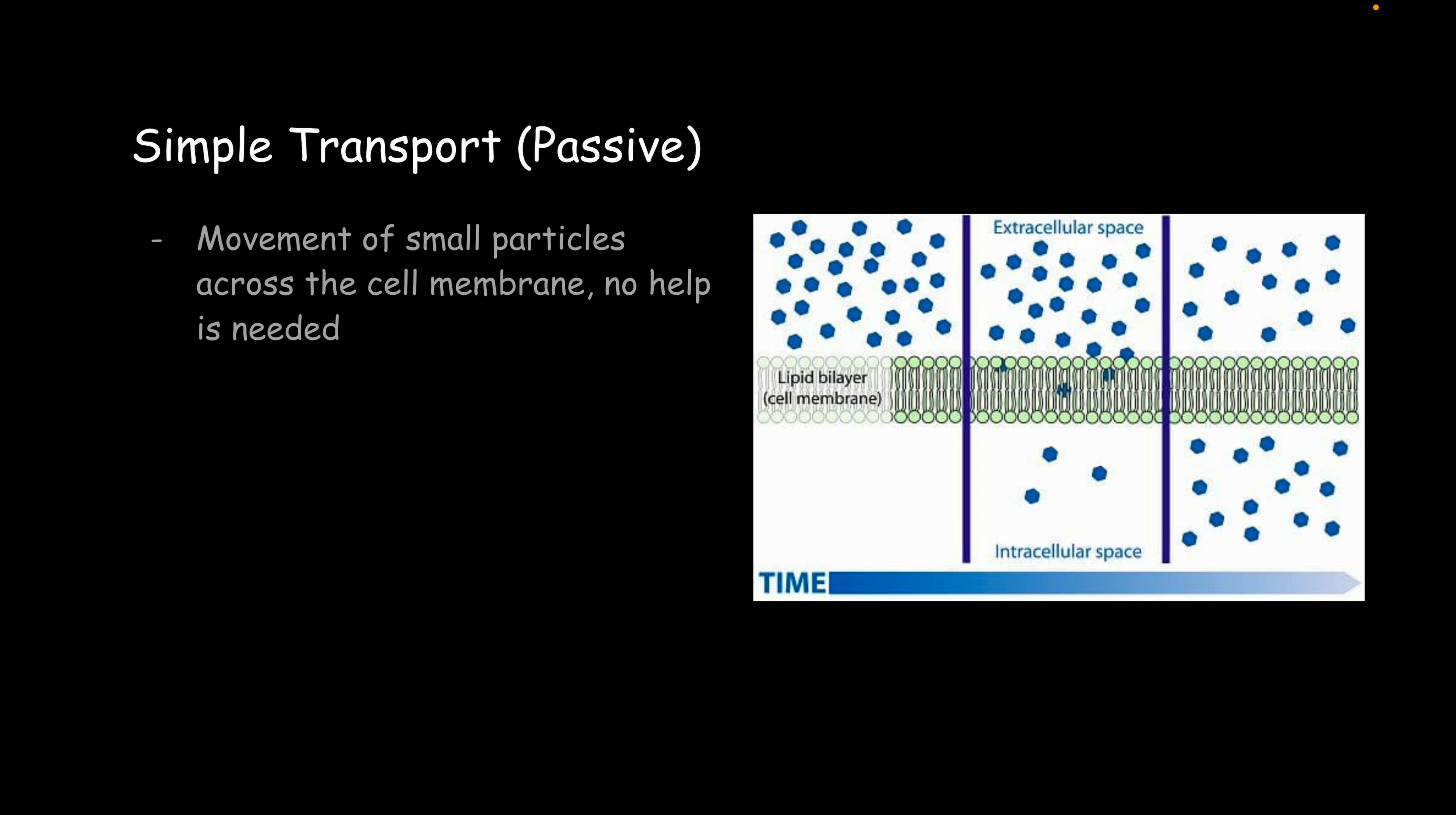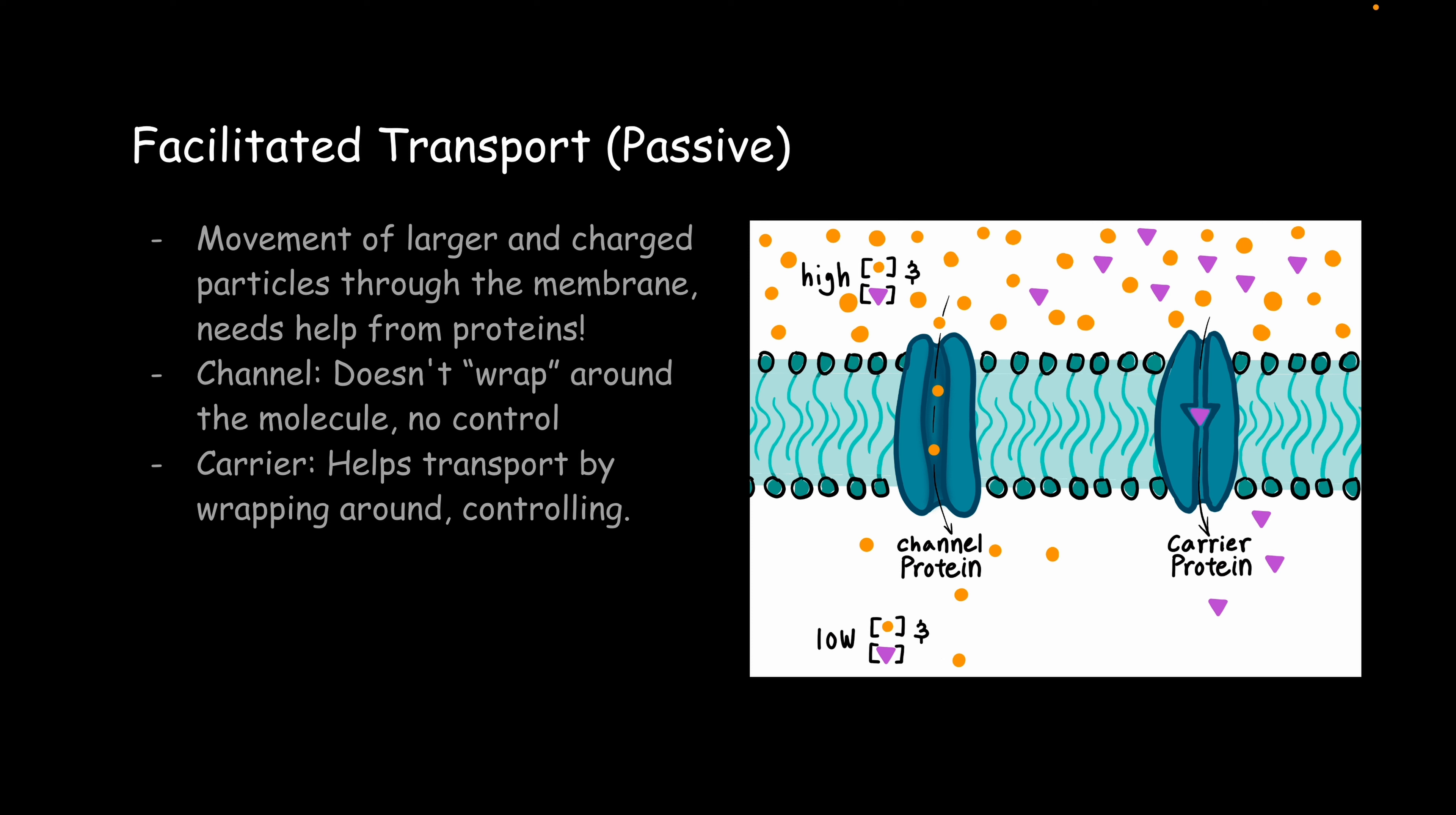Your first one, passive. This is movement of small particles across the membrane. No help is needed by the proteins that we talked about earlier. Which is actually how we get to facilitated transport. If you have larger or charged particles, you need a protein because it's not going to be able to pass through the membrane easily.